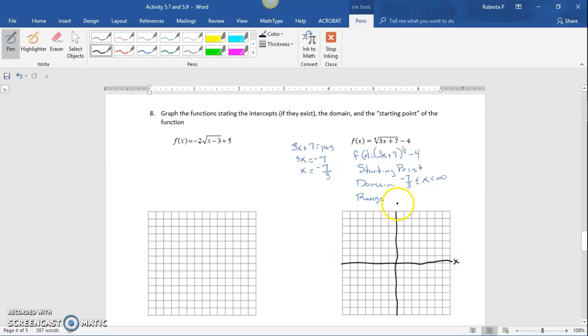We have x and f(x) axes. The starting point is at negative 7/3, which is about 1, 2, 3 units, at negative 4. So we know the range is negative 4 less than or equal to f(x), which is less than infinity.